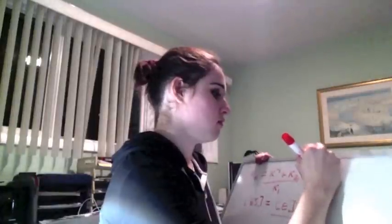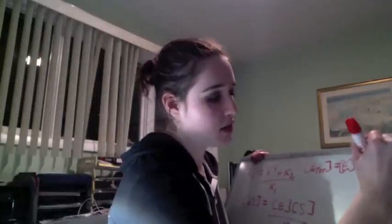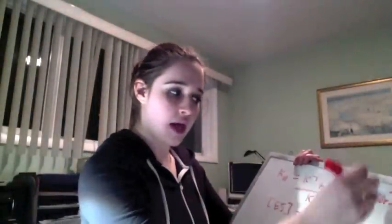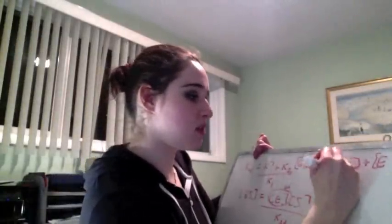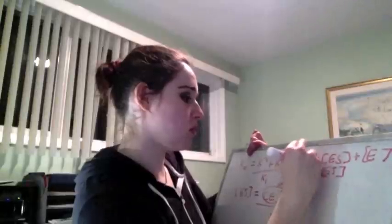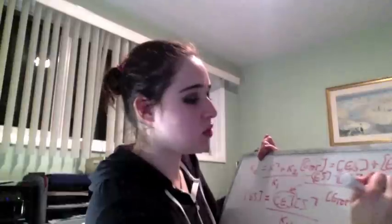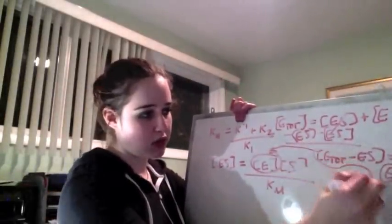We also know this: E total equals E free enzyme plus the enzyme bound to the substrate. We know that. So why don't we substitute that. We can solve for E by subtracting ES from E total and getting E total minus ES equals E. So now we can put that back into our original equation for E right here, because that's equal to E.